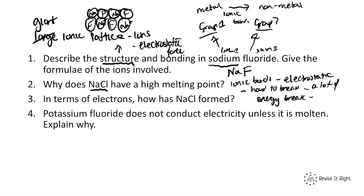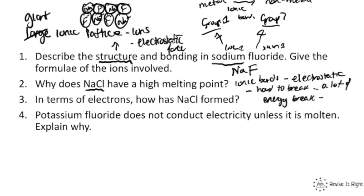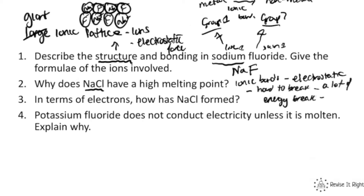In terms of electrons, how was NaCl formed? Sodium is in group 1, so sodium loses 1 electron. Chlorine gains that 1 electron. They then bond due to the opposite attraction, which is an electrostatic force.